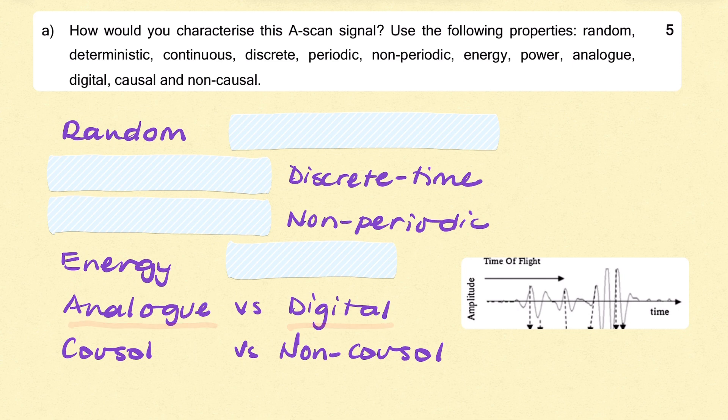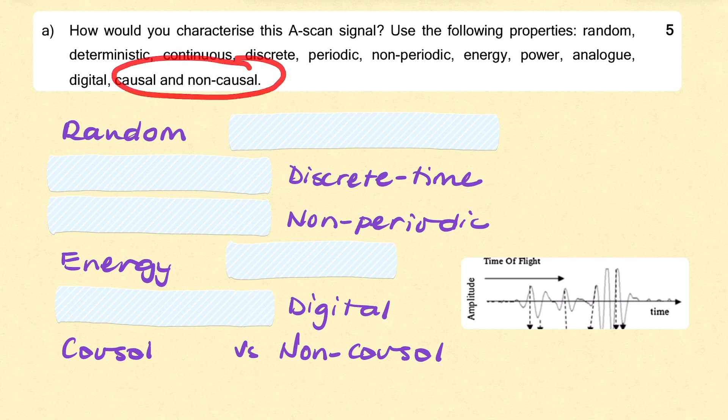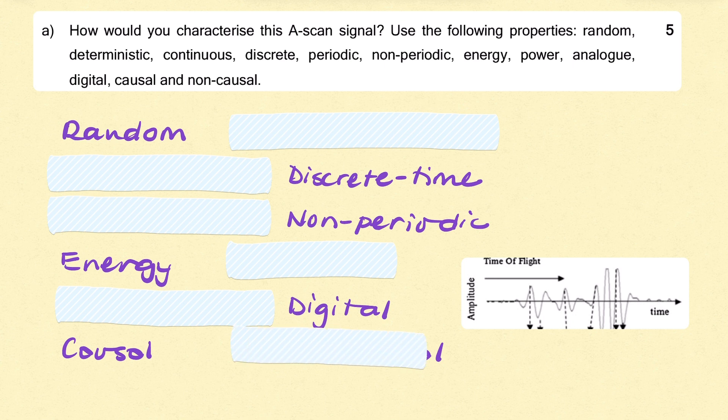Is it an analog or a digital signal? Well, we've said it's been sampled and we said it's been digitized, so it's a digital signal. It doesn't matter if it doesn't look digital to you. There could be so many levels that it looks continuous to you, but it's a digital signal because the question says it's been digitized. Now, whether it's causal or non-causal depends on whether the starting point of the signal is after or before t equals zero. I think it's safe to assume that your signal always starts after t equals zero unless you have information otherwise, so it's a causal signal.